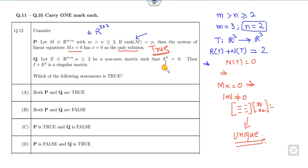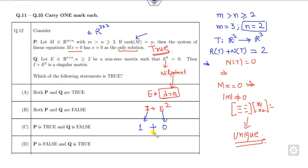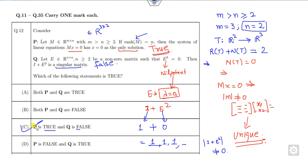For the next part: E³ = 0 means E is a nilpotent matrix, and for a nilpotent matrix all eigenvalues are 0. So E has eigenvalue 0. The eigenvalue of I is 1 and of E² is 0, so the eigenvalues of I + E² are all 1. Therefore the determinant of I + E² is non-zero — meaning it is a non-singular matrix. So the statement that it is singular is false. Hence P is true, Q is false.